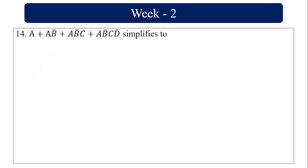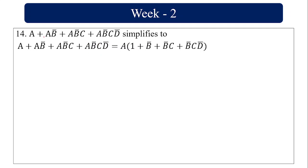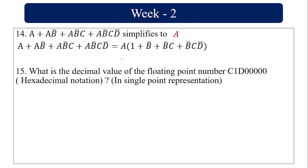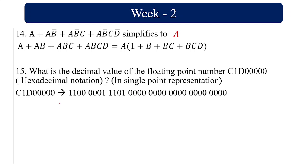Simplify A plus A·B bar plus A·B bar·C plus A·B bar·C·D bar: taking A common from all 4 terms gives A(1 plus B bar plus B bar·C plus B bar·C·D bar), and since 1 plus anything equals 1, the result is A. For the hexadecimal floating point number, convert each hex digit to 4-bit binary — C is 1100, 1 is 0001, D is 1101, and zeros — to get the 32-bit representation. Taking the reverse as in the previous problem gives the decimal value of minus 26, since the sign bit is 1.